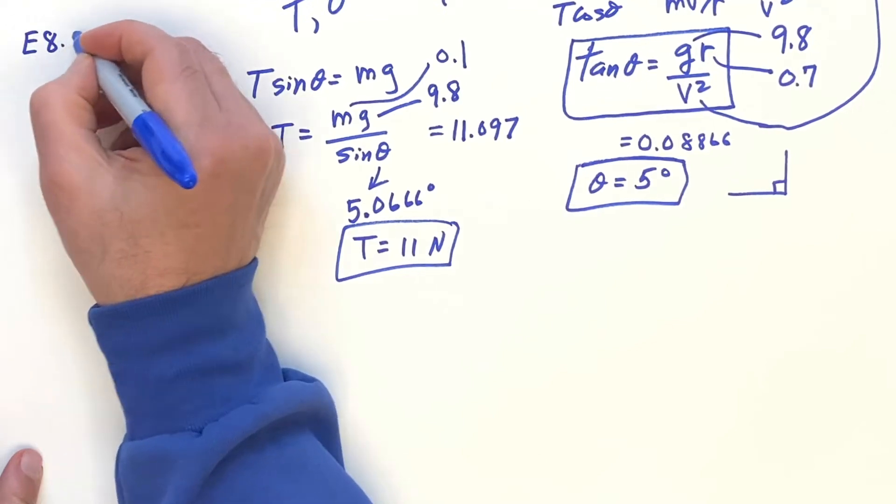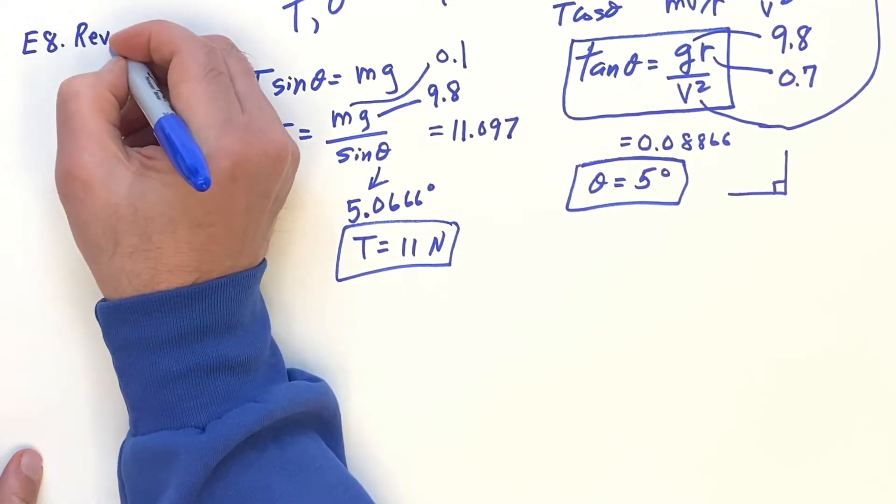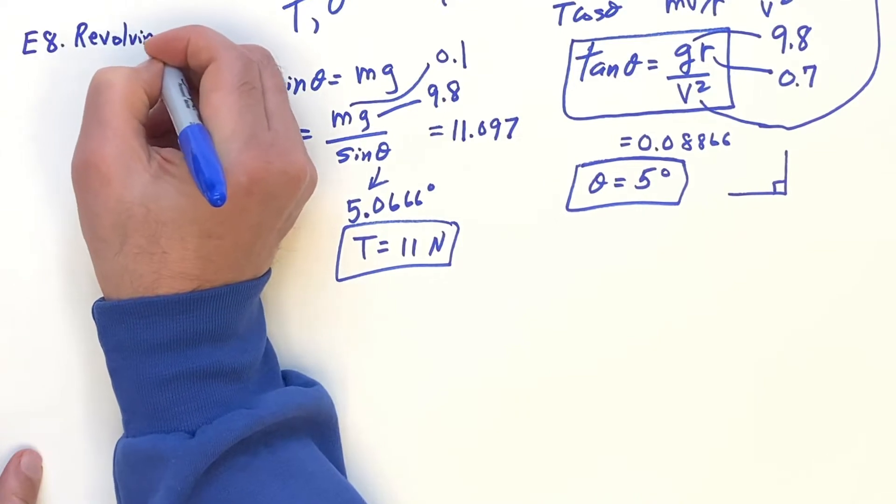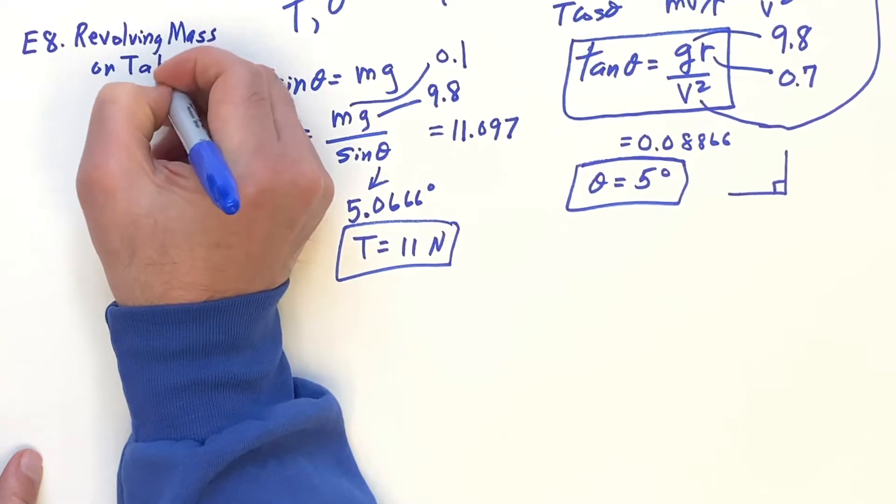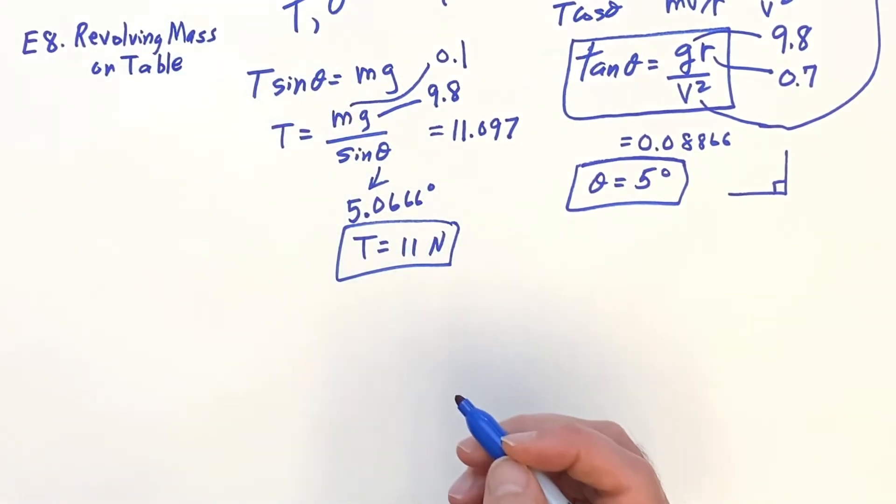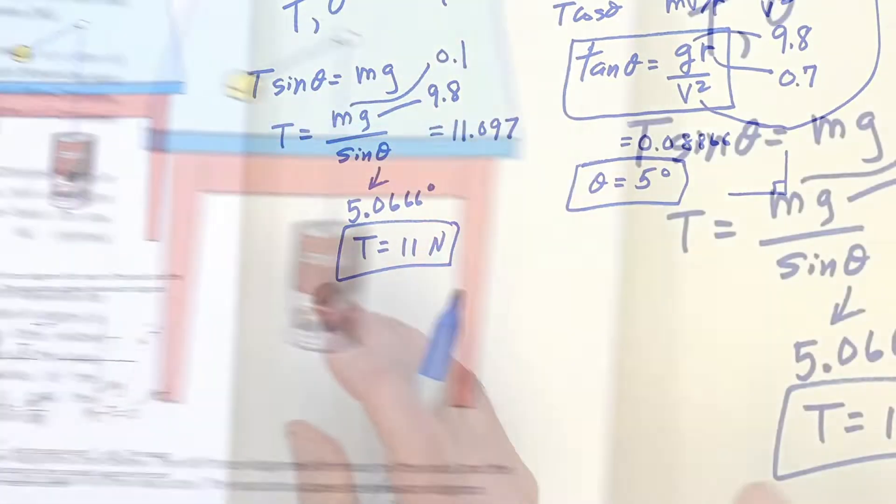Now comes E8, revolving mass on the table. This is a cool problem. Here it is.